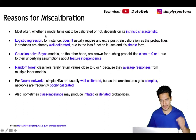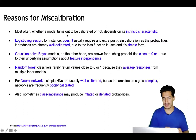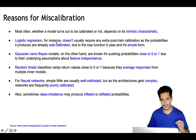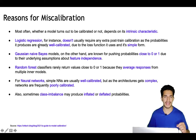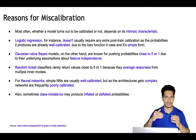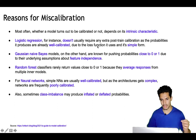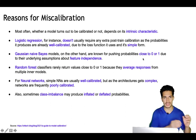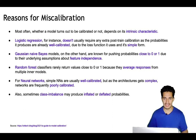Why does a machine learning model become miscalibrated? Most often it depends on the intrinsic characteristics of the algorithm. Logistic regression doesn't usually require extra post-training calibration, as the probabilities it produces are already well calibrated due to its loss function and its simple linear form — using log-odds with a sigmoid to get probabilities. On the other hand, Gaussian Naive Bayes pushes probabilities close to 0 or 1 due to its underlying assumption of feature independence, so it's usually miscalibrated.